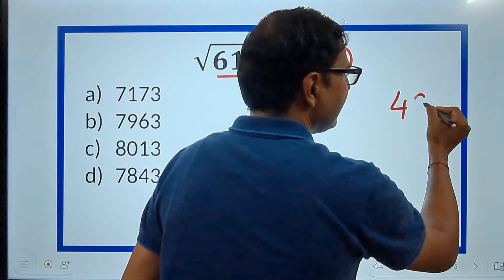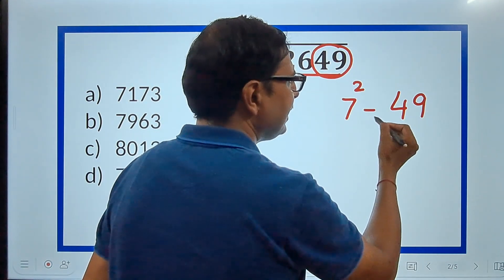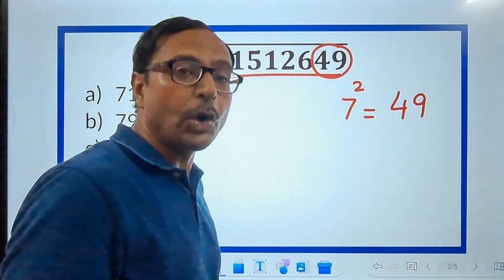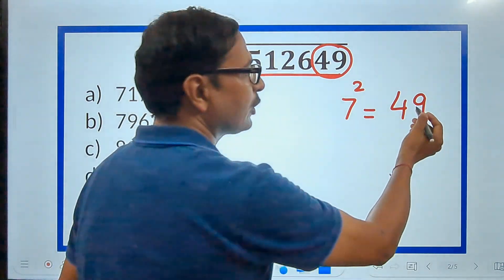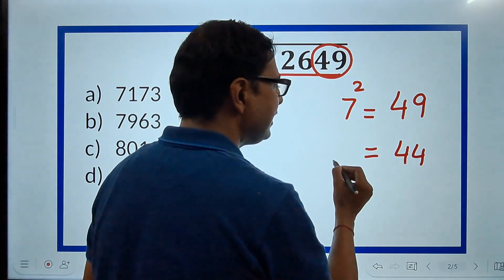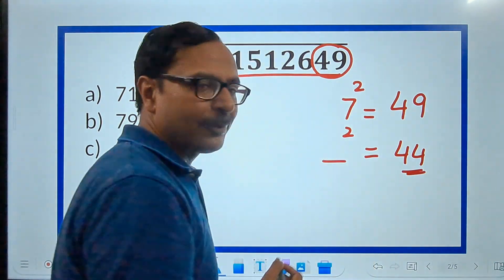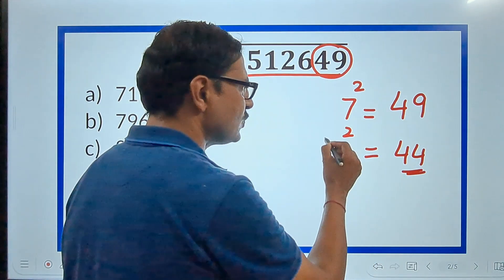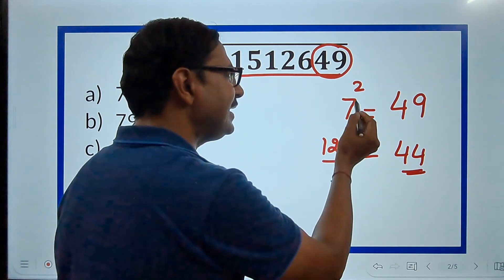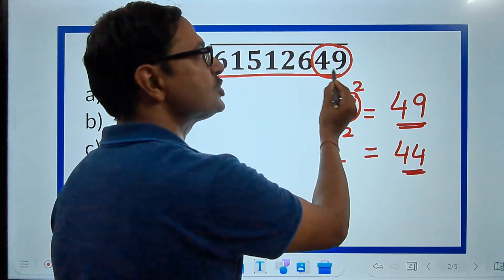49 itself is a perfect square. And that is 7 square, right? Even if this number is not a perfect square. Suppose in place of 49, you have 44. So, you have to identify a number whose square ends in 44. And that's pretty easy, right? 12 square.